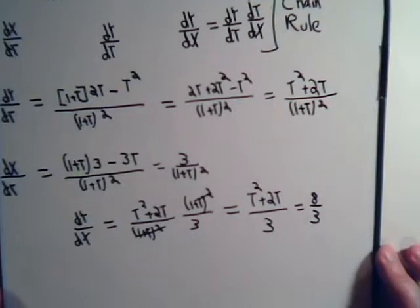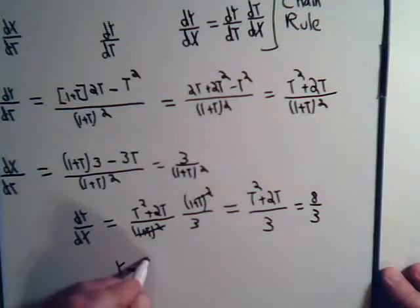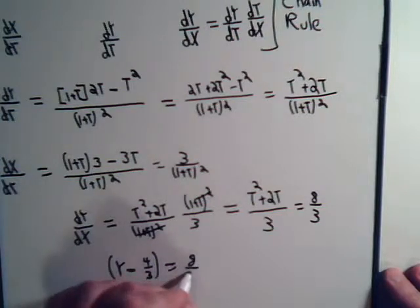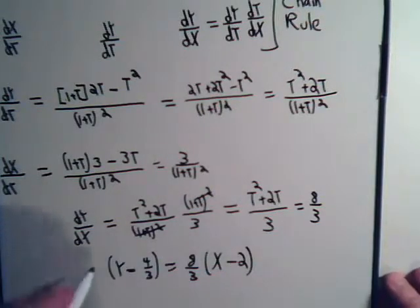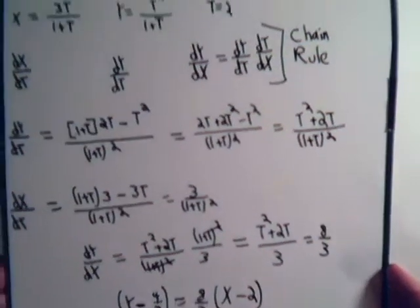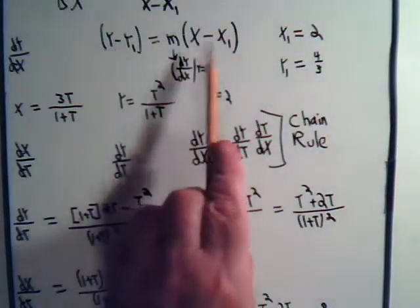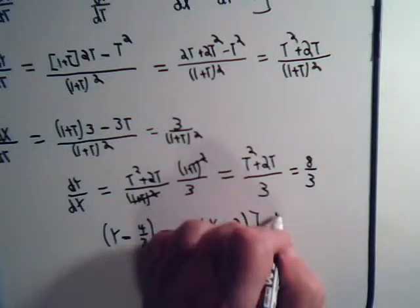So, the equation of our tangent line, y minus y1, y1 equals 4 thirds, that equals the slope, 8 thirds, times x minus x1, and x1 is 2. So this is the equation of our tangent line. Remember, right away at the beginning, we determined x1 and y1, and that's the general formula for our tangent line, y minus y1 equals the slope times x minus x1.